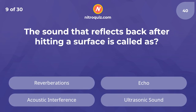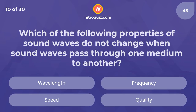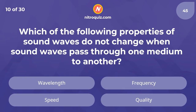The sound that reflects back after hitting a surface is called — the answer is echo. Which of the following properties of sound waves do not change when sound waves pass through one medium to another? The answer is frequency.